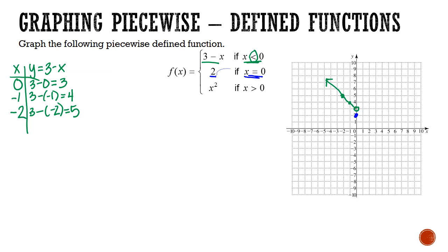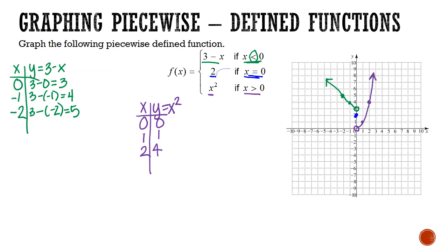For the last piece, we're using x squared for x greater than 0. We'll start at 0 even though we're only including values greater than 0, because we need an open circle there. We'll also do 1 and 2. Zero squared is 0, 1 squared is 1, and 2 squared is 4. When I graph these: (0, 0) gets an open circle since we can't equal it, then (1, 1) and (2, 4). That's a parabola.